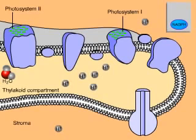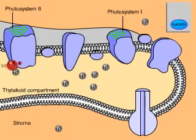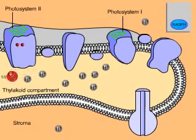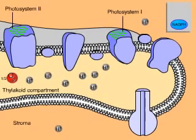Photosystem 2 replenishes its electrons by splitting water. Hydrogen ions and oxygen are released into the thylakoid compartment. This is where the oxygen gas generated by photosynthesis comes from.